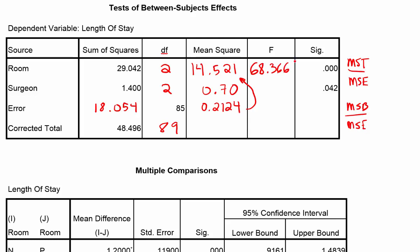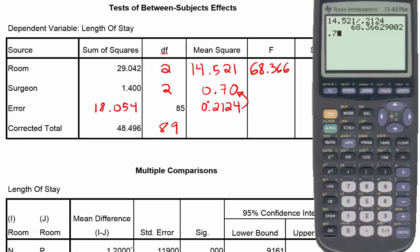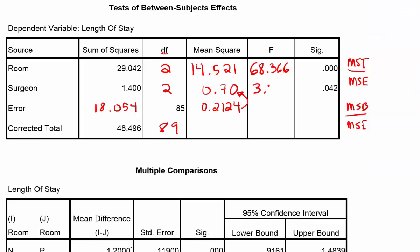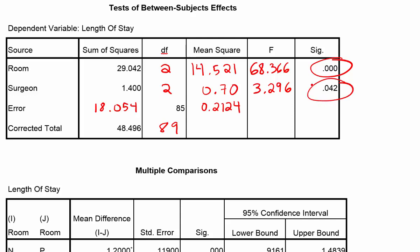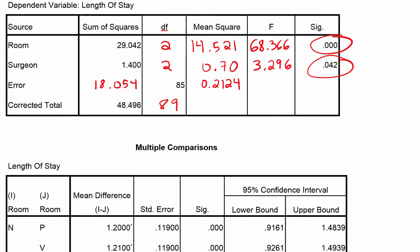For the F test stat for blocks, we put MSE into MSB: 0.7 divided by 0.2124 gives us approximately 3.296. Those are our two test statistics. They've given us the corresponding significance levels. We can see that the treatment p-value is very small — highly significant — meaning there is a treatment effect. The blocks p-value, while not highly significant, is certainly less than 5%.